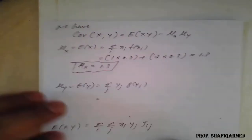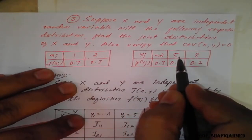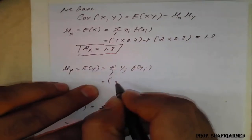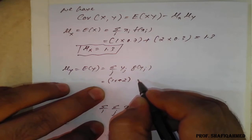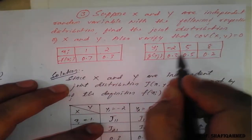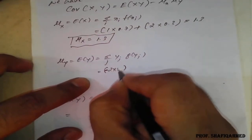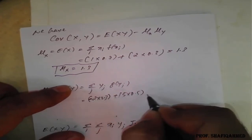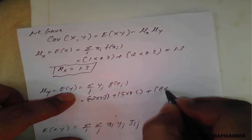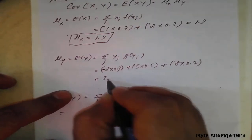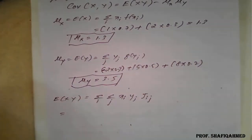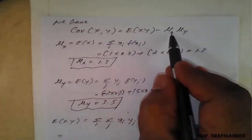Similarly, μy = E(y) = (−2)(0.3) + 5(0.5) + 8(0.2). On simplification the result is 3.5. So μx = 1.3 and μy = 3.5.